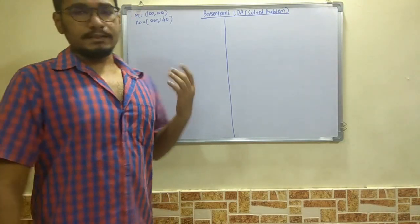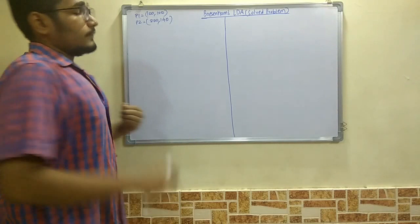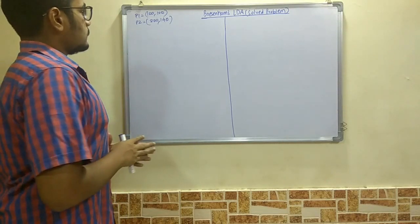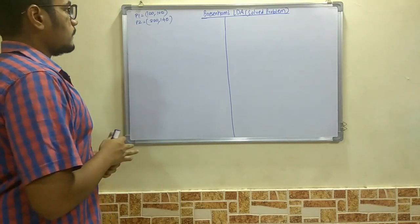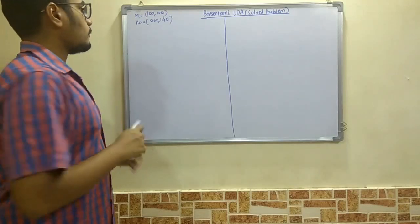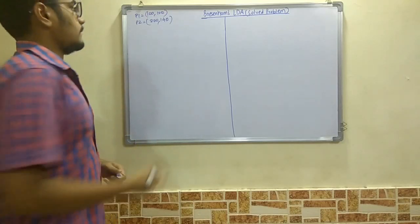So let's get started. We are given two points: P1 and P2. P1 has coordinates (100, 100) and P2 has coordinates (200, 140).